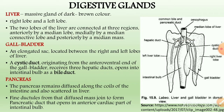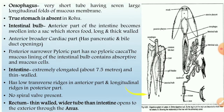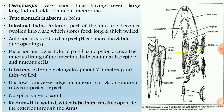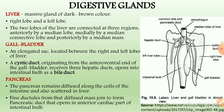The pancreas is not present as a distinct structure; it is found in a diffused form scattered along the coils of the intestine and also on the liver. From the pancreas, fine ductules arise and join together to form the pancreatic duct, which opens into the anterior cardiac part of the intestinal bulb.